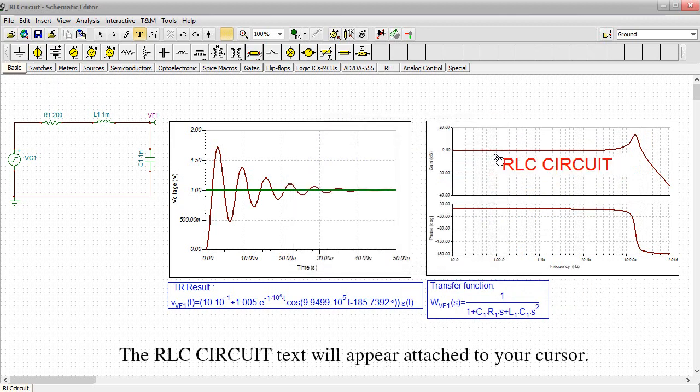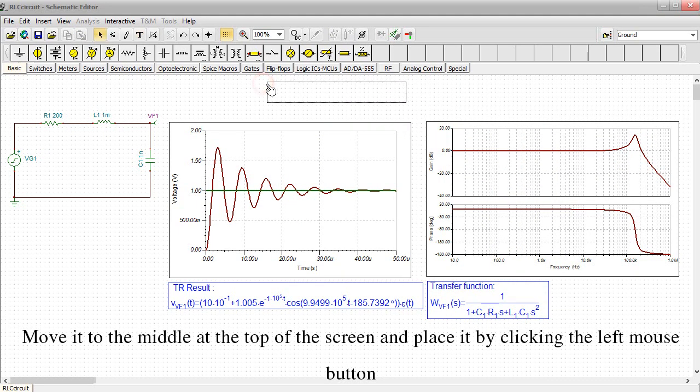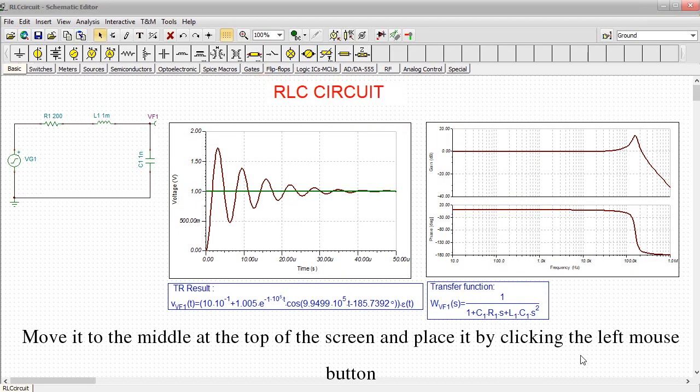The RLC Circuit text will appear attached to your cursor. Move it to the middle at the top of the screen and place it by clicking the left mouse button.